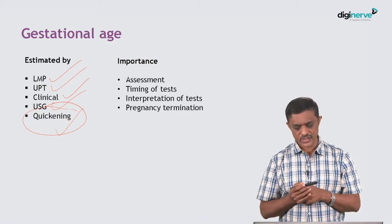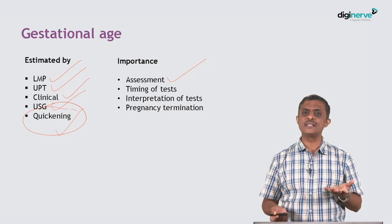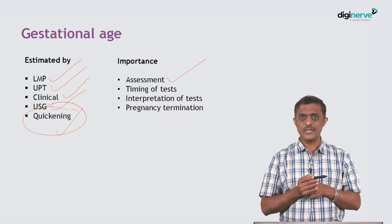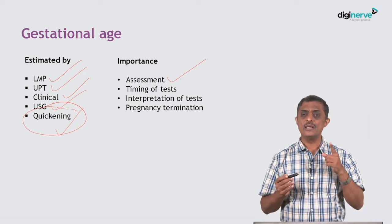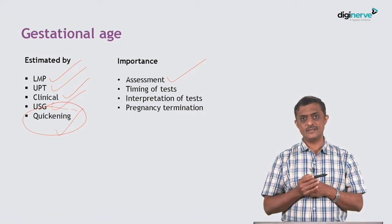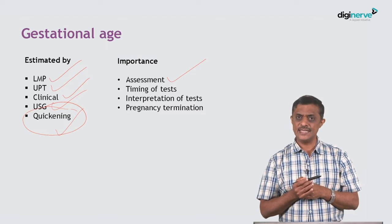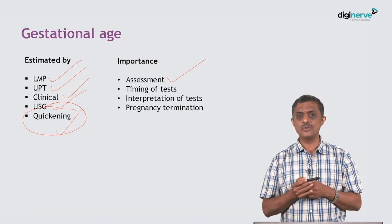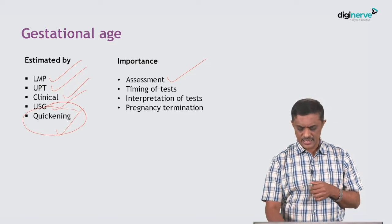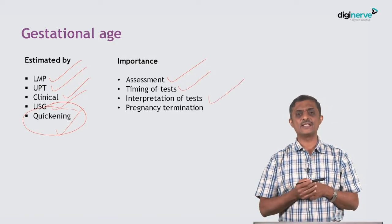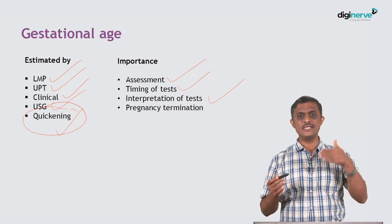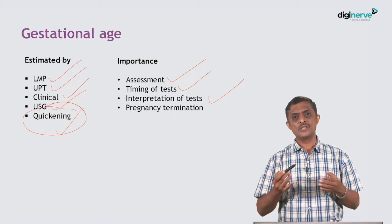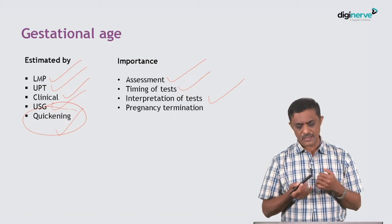Why should you know the gestational age? Basically for assessment itself — when should I assess this patient. For example, an NT scan (nuchal translucency scan) is done between 11 weeks and 13 weeks plus 6 days. If you know the exact gestational age, you can time it appropriately. Gestational age is also needed for timing tests and interpreting tests — beta-HCG is quite high in the first trimester but falls in the second trimester, so knowing gestational age makes interpretation easy.